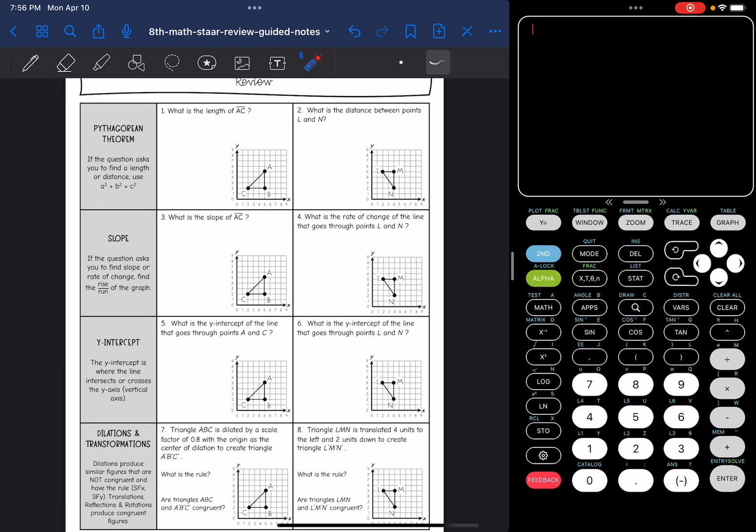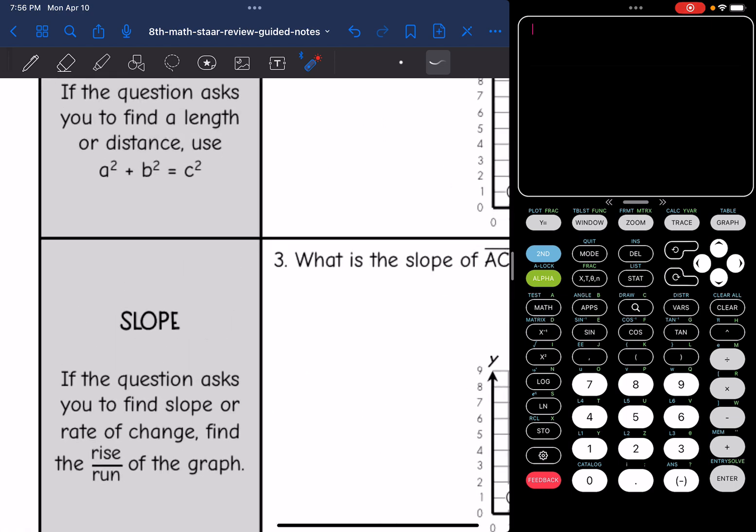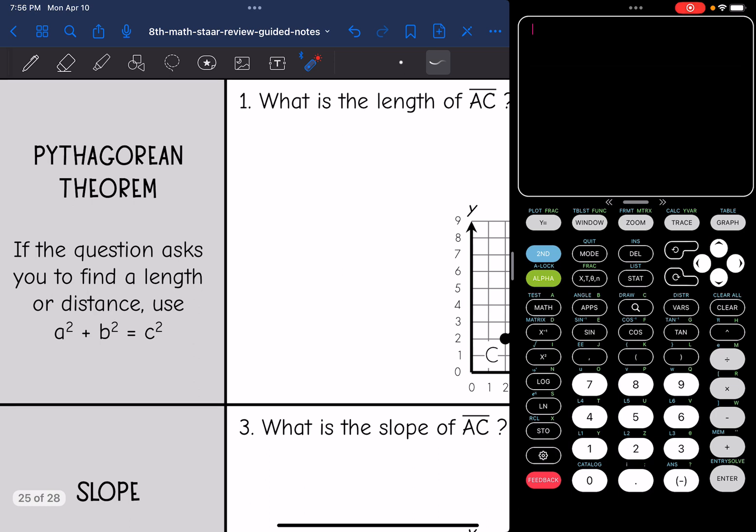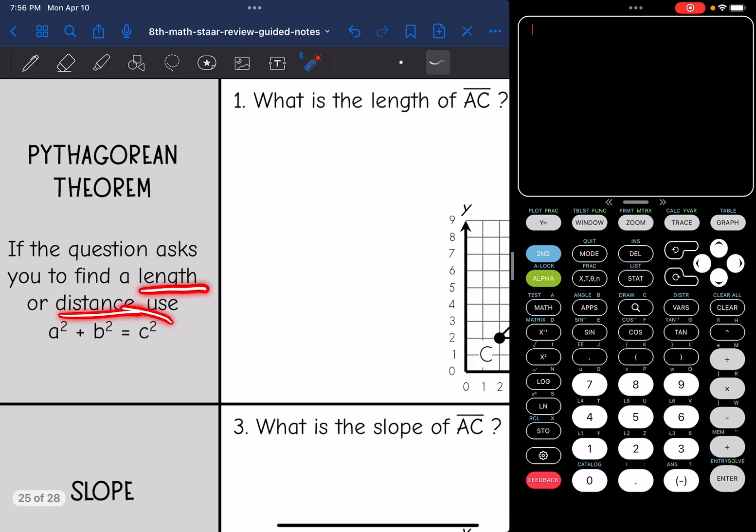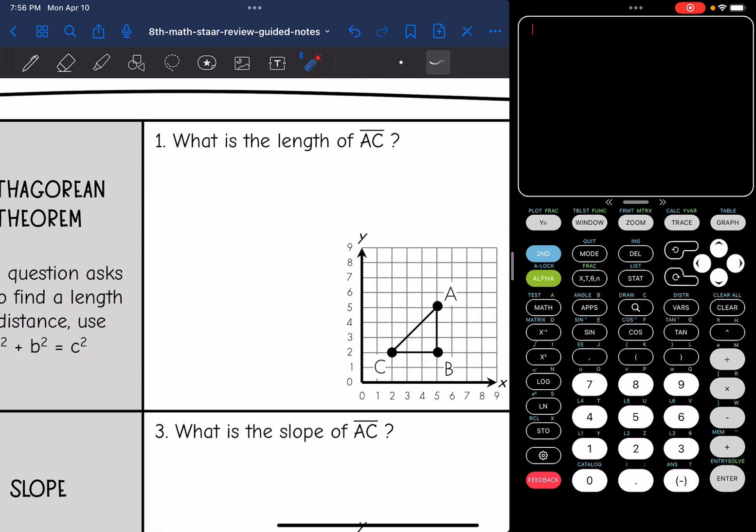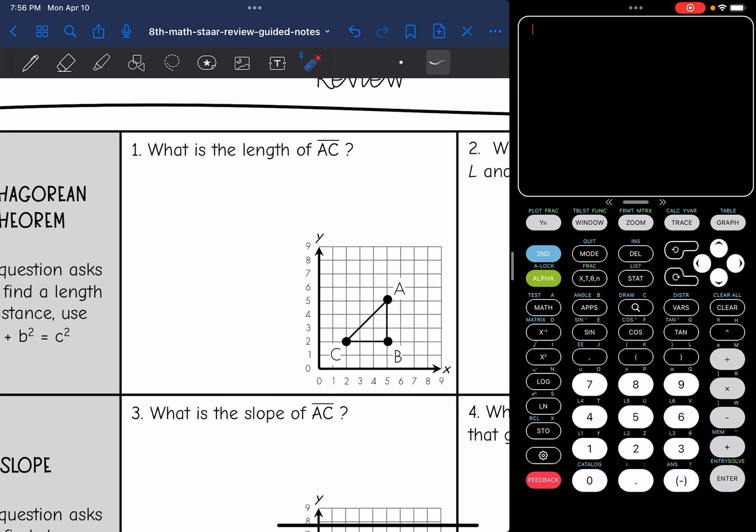Let's start with Pythagorean theorem. If the question is asking you to find a length or a distance, you want to use Pythagorean theorem to find that. This first one says what is the length of AC, which is the hypotenuse of this triangle. I'm going to count the vertical and horizontal legs. So this leg would be three and this leg is also three.